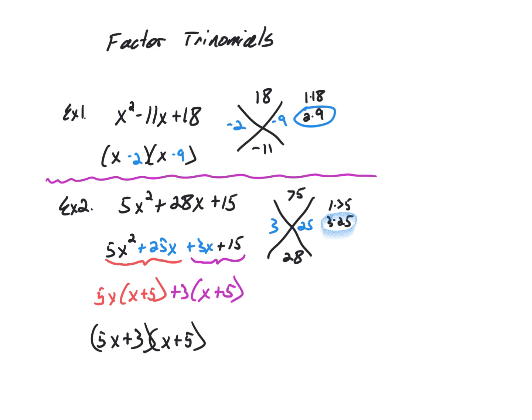Now let's look at factoring trinomials. The first type is where a equals 1 — meaning the leading term is 1x squared — in the form ax squared plus bx plus c. We can use an x-puzzle to help. We multiply a times c, which is 18, and look for factors of 18 that also combine to equal negative 11. The factors 2 and 9 work if both are negative: negative 2 times negative 9 is 18, and negative 2 plus negative 9 is negative 11. So the factored form is (x minus 2)(x minus 9). You can verify using the FOIL method.